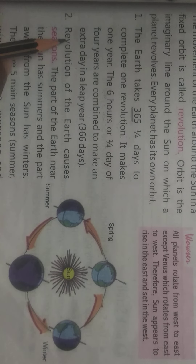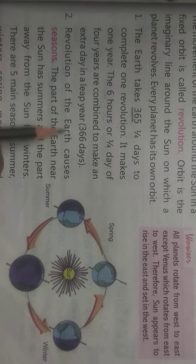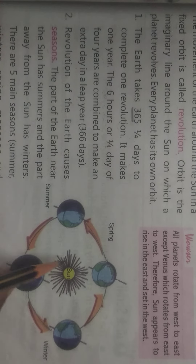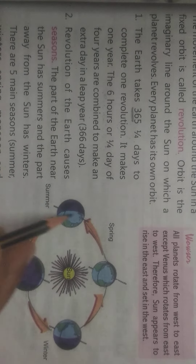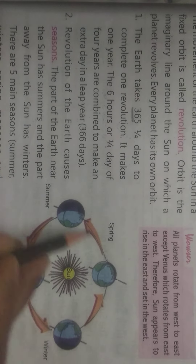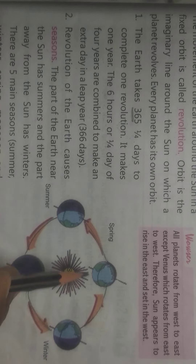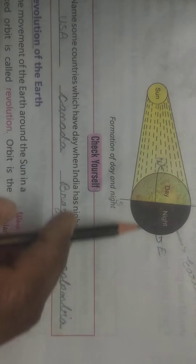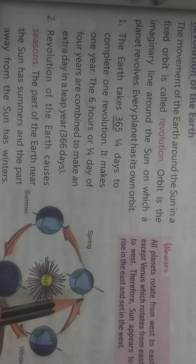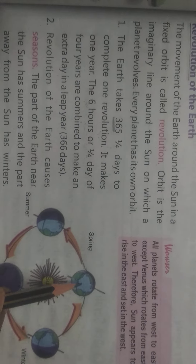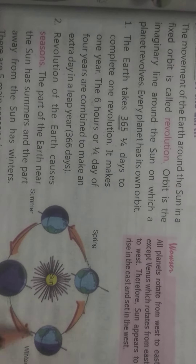Revolution of the earth causes seasons. Earth ka sun ke charo aur ghumne ke wajah se seasons form hote hain. The rotation of the earth causes day and nights, and the revolution of the earth causes seasons.